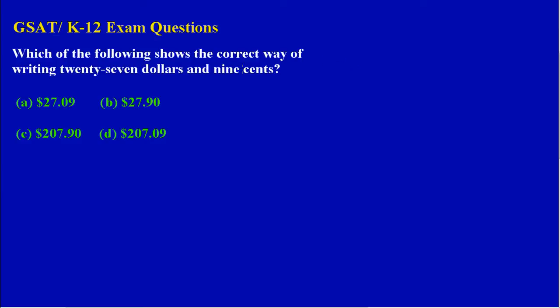In this video we're asked which one of the following shows the correct way of writing twenty-seven dollars and nine cents. Now by intuition, the easy way of looking at this question is to have a picture of the place value system chart in your head.